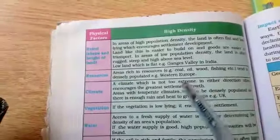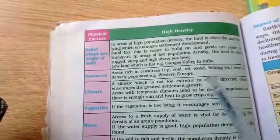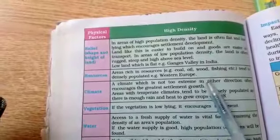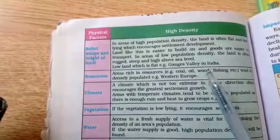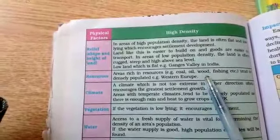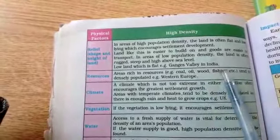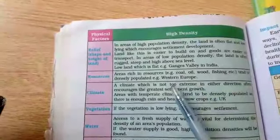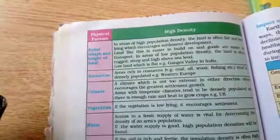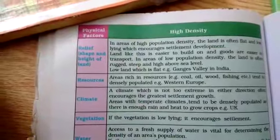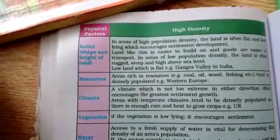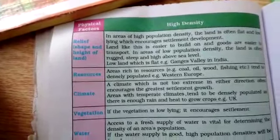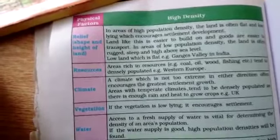The one main reason for high density population is the land. Definitely the land would be flat, and on flat land it would be easy to build houses and build factories, so people will definitely settle down there.